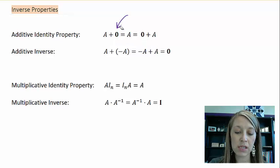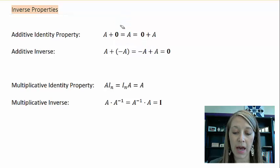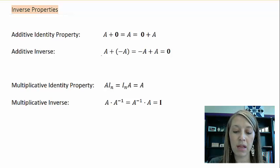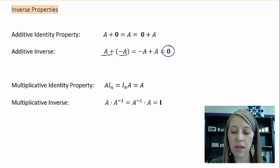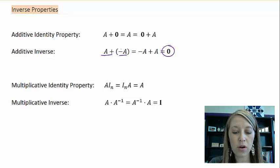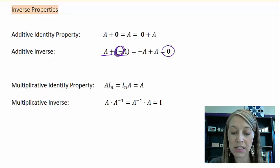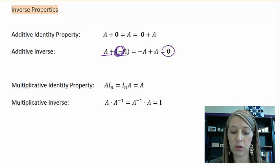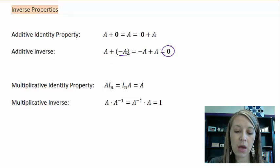If that's what zero does, then we need an inverse of that — meaning if I add two matrices, I need to be able to come up with a zero matrix. So our additive inverse is just the negative scalar multiplied by our original matrix, and this is really easy to do.